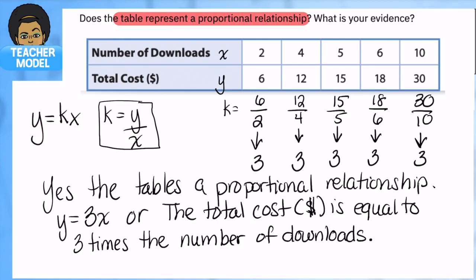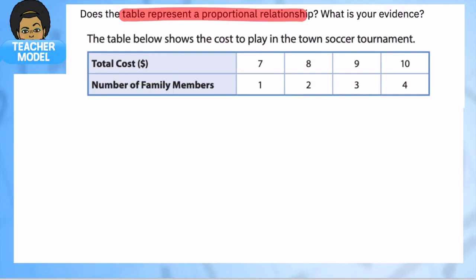We're going to try this one more time. Does the table represent a proportional relationship? What's your evidence? Again we want to identify k. Looking at this one, I will say think about this for a minute. The more family members I have, I know that's going to impact the cost. So in this case this is my y, but I'm going to see if they have a proportional relationship together.